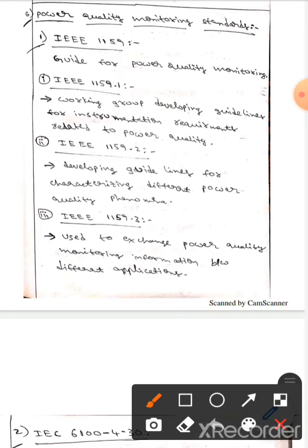The next one is IEEE 1159.2. Here the working group develops guidelines for characterizing different power quality phenomena. Next is IEEE 1159.3, which is used to exchange power quality monitoring information between different applications.